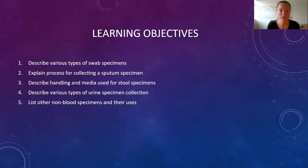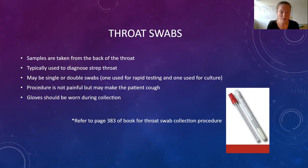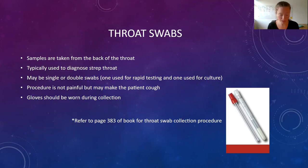We're going to talk about the different types of swabs, or the tests that use swabs — sputum, stool, urine, and a few other non-blood specimens. Swab specimens: basically, sterile swabs can be used to test for a variety of things, including different illnesses that require culturing — growing something and detecting if there are any microorganisms or certain microorganisms present.